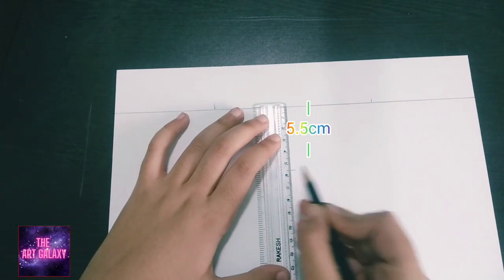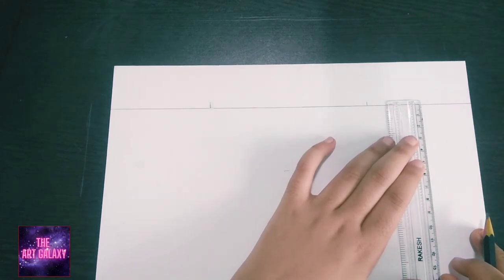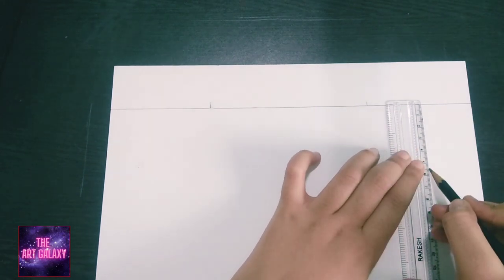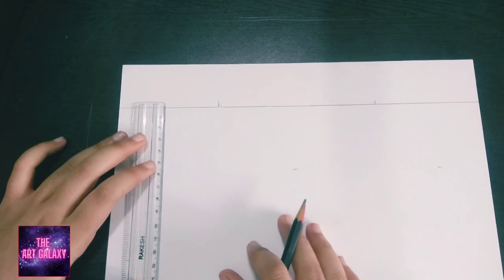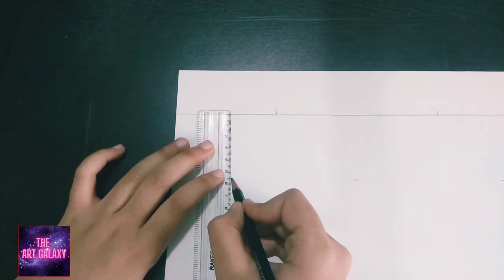Now we have to draw a vertical distance of 5.5 centimeters from the line which we have drawn earlier. We have to draw three points and then join those points to make a line. Make sure your marks are quite clear.